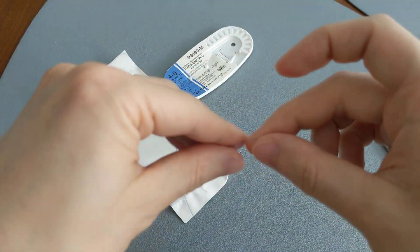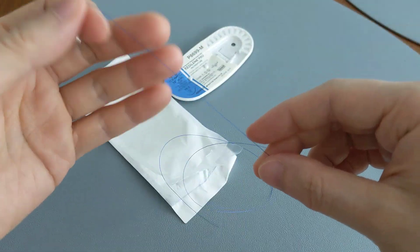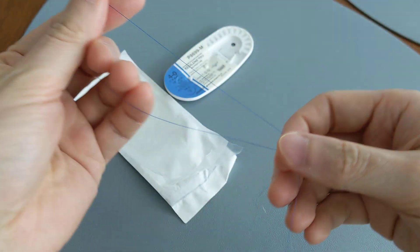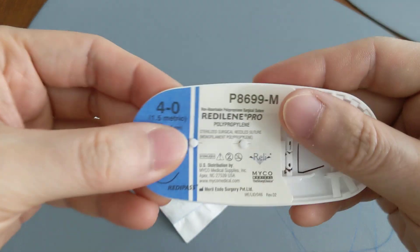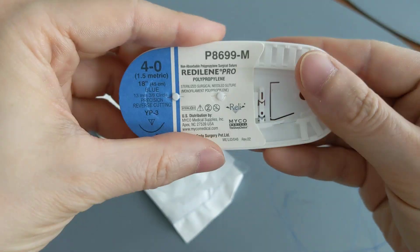Okay, so once again, blue stitches are not dissolvable. They are synthetic and they are made of polypropylene. Okay, and that's it.